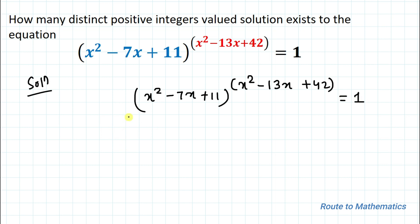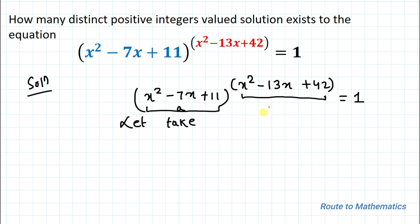Without any delay, let's start the solution. Let a = x² - 7x + 11 and b = x² - 13x + 42. The equation then becomes a^b = 1.